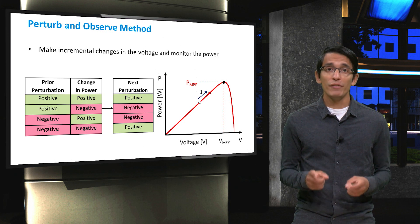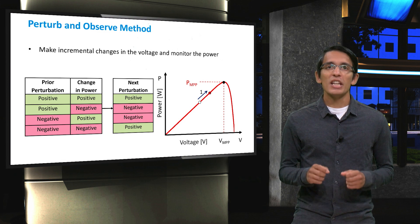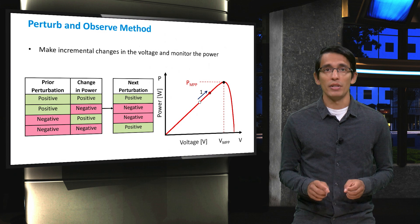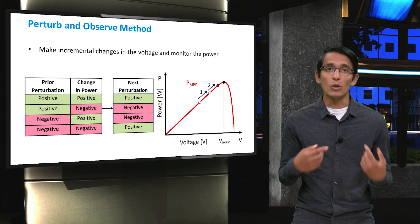Now, the voltage has shifted positively and the power has gone up. Therefore, the next perturbation should also be positive. Again, we have a positive perturbation with a positive change in power. This means we will again increase the voltage.